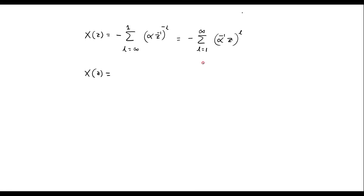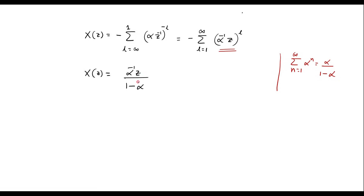We know that summation n equal to 1 to infinity of alpha power n is given by alpha divided by 1 minus alpha. Applying this here, the entire (alpha inverse z) is the alpha in that formula. So I can write X of Z equals minus times (alpha inverse z) divided by (1 minus alpha inverse z). To remove the minus sign, I can write it as (alpha inverse z) divided by (alpha inverse z minus 1).